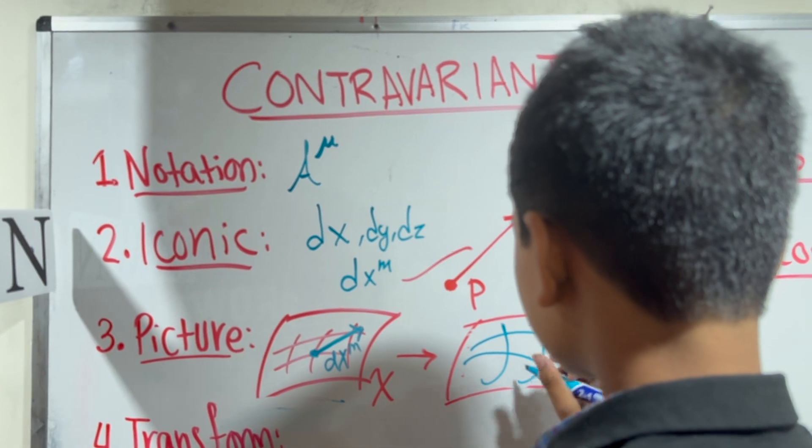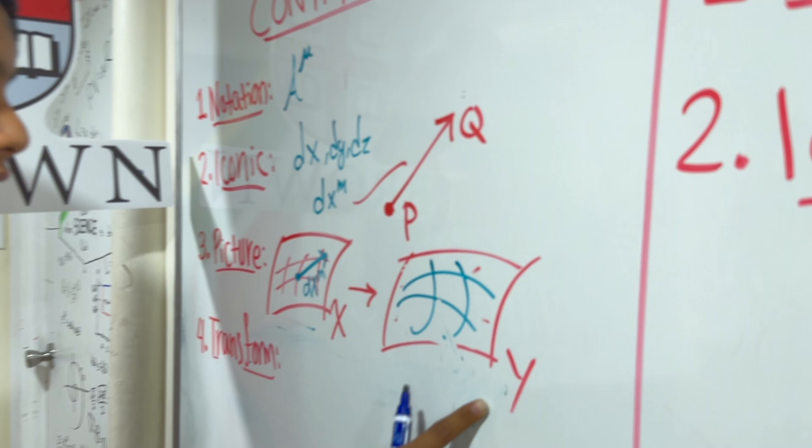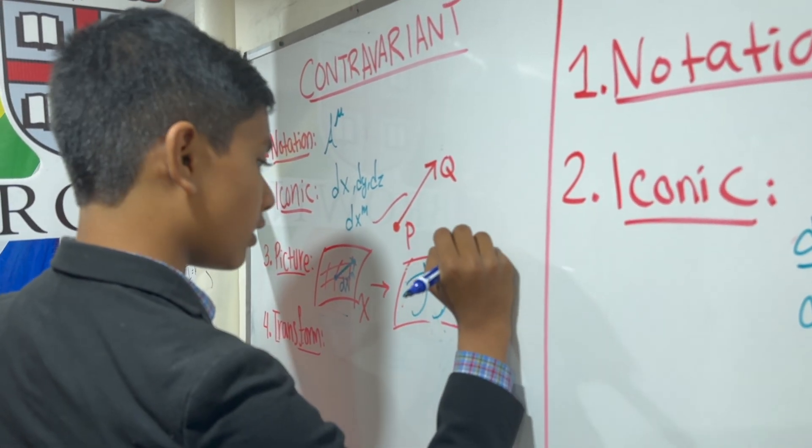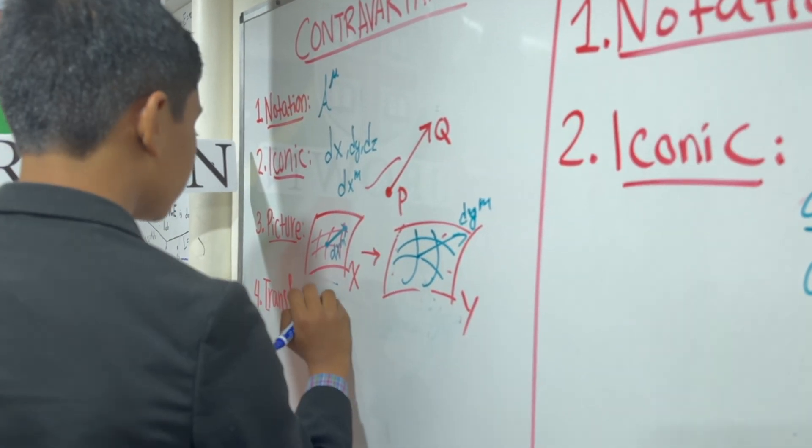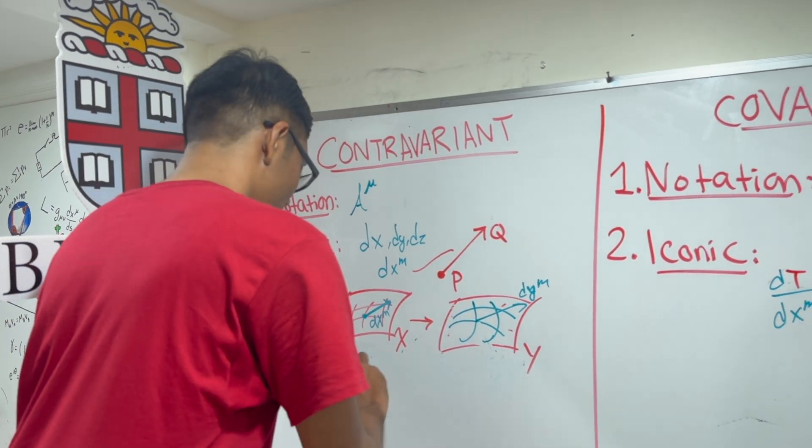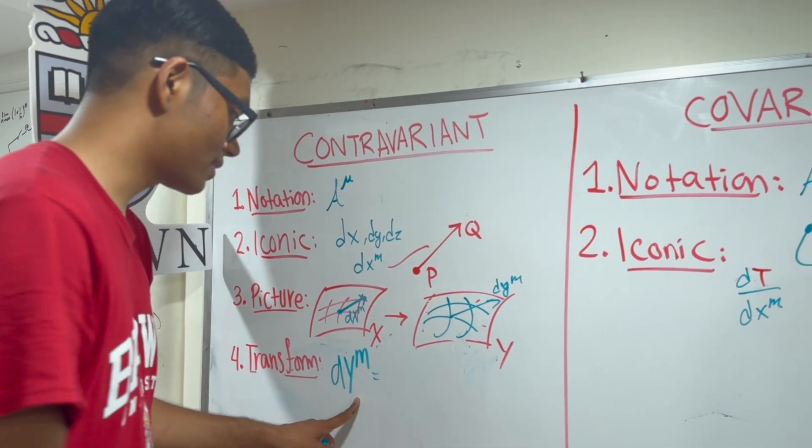How do contravariant components transform? Can you write that down? Well, here's the thing. dym doesn't look like a vastly different vector, in fact. It's just the same thing. All we're doing is changing our coordinates in the way we describe them. So, how do we transform a contravariant vector? If we want to know the displacement dxm in the y-coordinate system, all we have to do is see how y responds to each little change in x and sum over all those little changes in x.